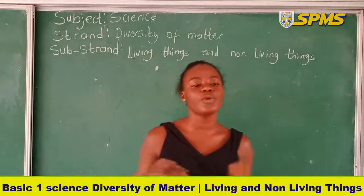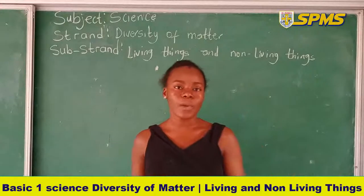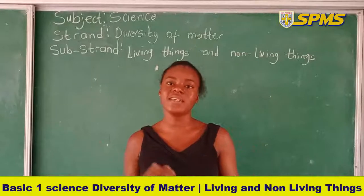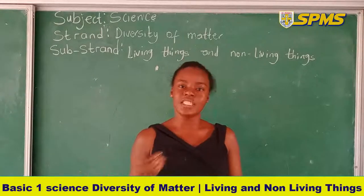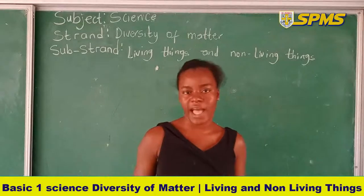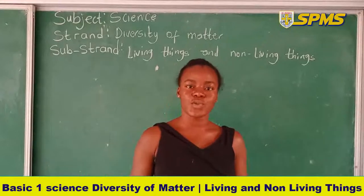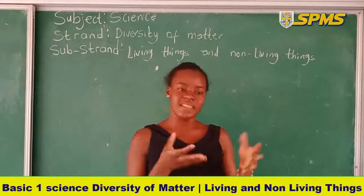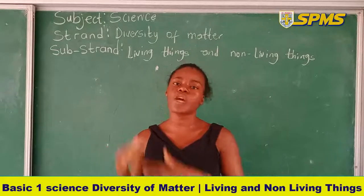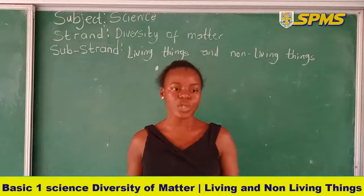Another basic need is food. Animals like grasshoppers need nuts and seeds, while other animals depend on other animals to survive. For example, a tiger is a carnivore — it eats other animals. So animals need food, whether plants or other animals, in order to survive.